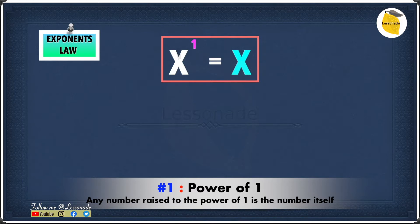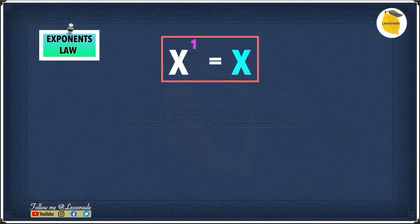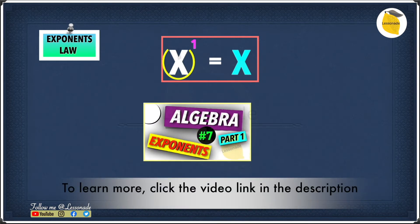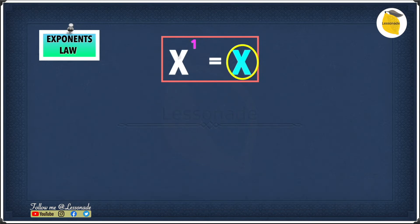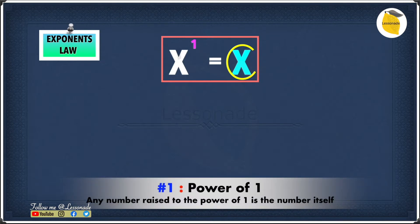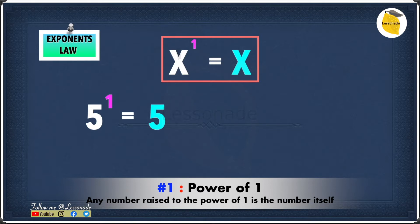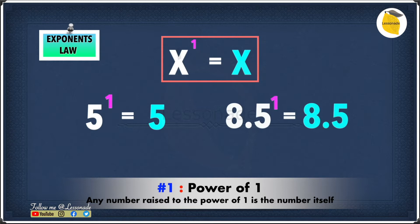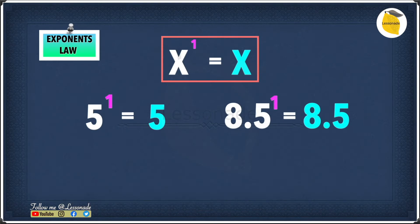Here we have x to the power of one equals x. This rule says that any number raised to the power of one is basically just itself. For example, 5 raised to the power of one equals 5. Or 8.5 raised to the power of one will be 8.5, because any number raised to the power of one is just itself.